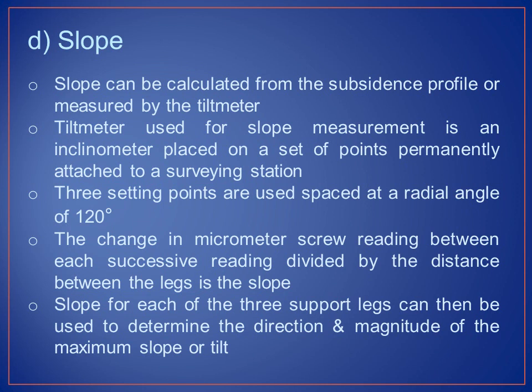Slope can be calculated from the subsidence profile or measured by a tilt meter. The tilt meter used for slope measurement is an inclinometer placed on a set of points permanently attached to a surveying station. Three setting points are spaced at a radial angle of 120 degrees. The change in micrometer screw reading between each successive reading divided by the distance between the legs gives the slope. The slope for each of the three support legs can then be used for determining the direction and magnitude of the maximum slope or tilt.